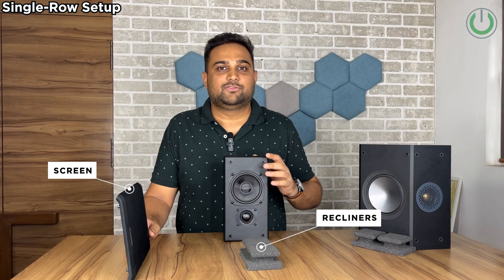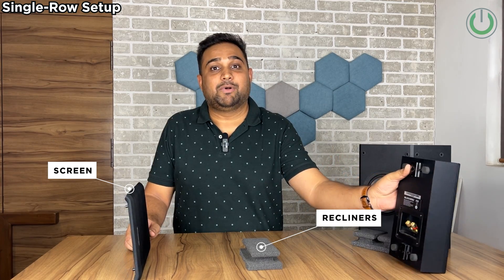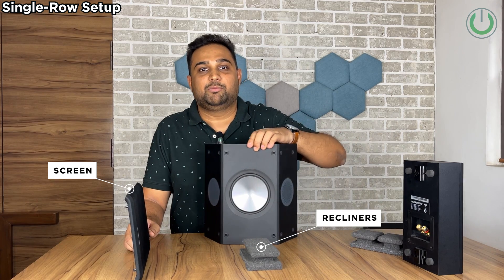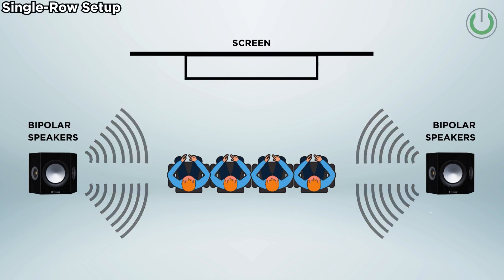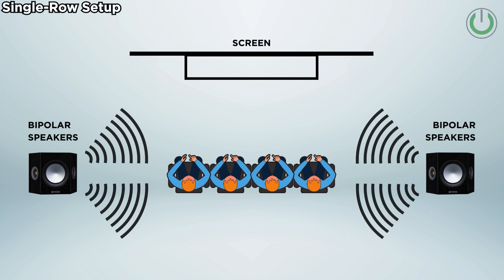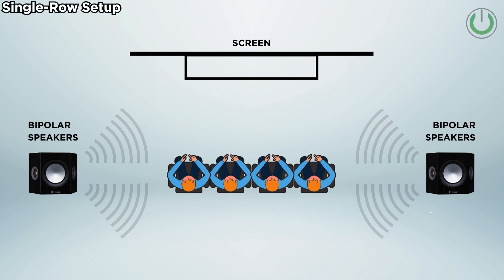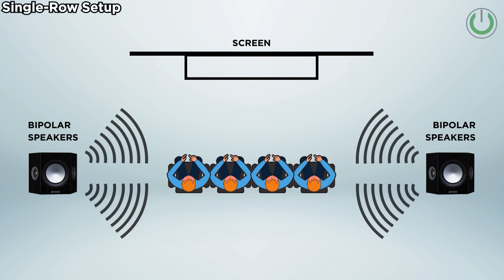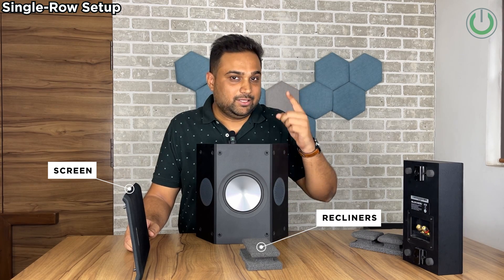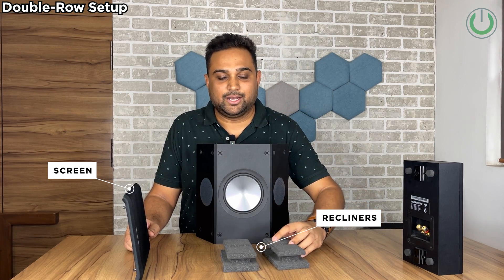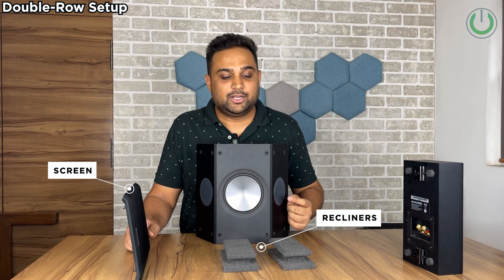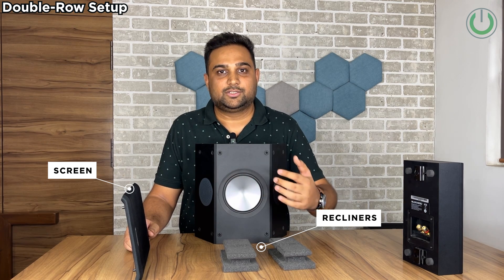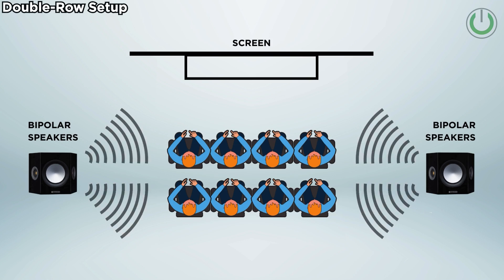This is where the magic of a bipolar speaker comes in, because the bipolar speaker can help you cover the sound far more effectively since the tweeters are off-axis, meaning they are not going to throw high-frequency sound directly towards the listener's ears. In the same case, when you add one more row of seating, the added advantage is that these two tweeters can throw sound to the back row as well as to the front row.